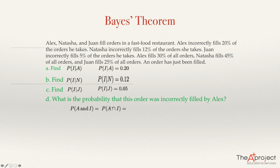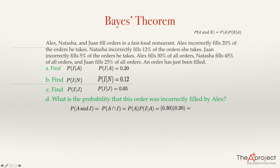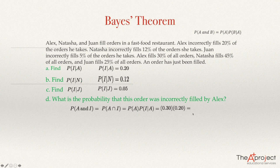This is the symbol we use for AND in probability. If we want to answer these questions, we need to use the formula of joint probability. The formula is: the probability of A and B equals the probability of A times the probability of B given A. So I'm going to use the probability of A times the probability of being incorrect given that it was filled by Alex. This will be 0.30 times 0.20, which equals 0.06.